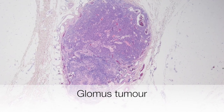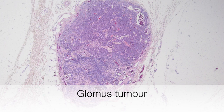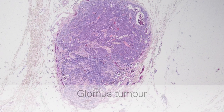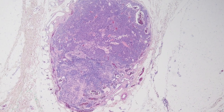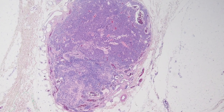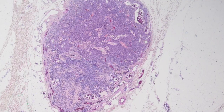This is a typical low-power appearance of a glomus tumour. It is well circumscribed and here it is situated in the subcutaneous tissue.